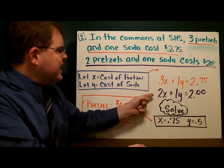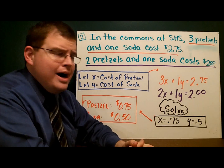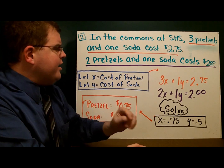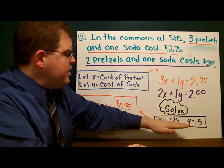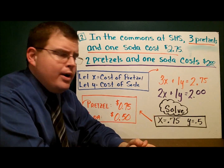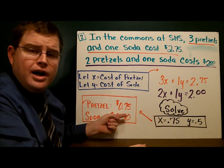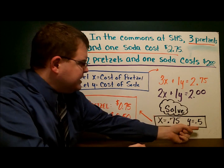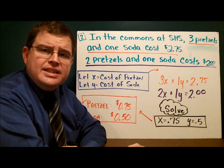Similarly, from the second part: 2x plus 1y equals $2.00. Choose your method and solve the system. X equals $0.75 and y equals $0.50. Since x is the cost of a pretzel, a pretzel costs $0.75. Y is the cost of a soda, so a soda is $0.50.